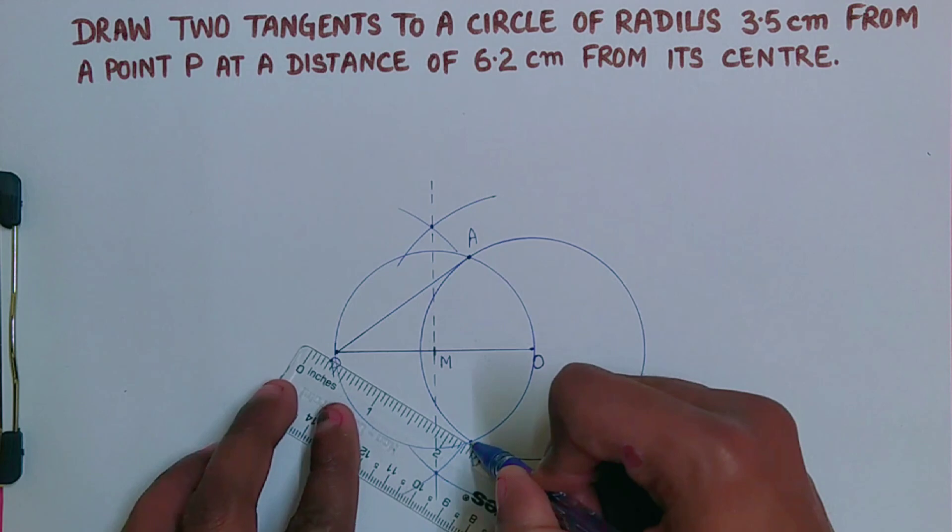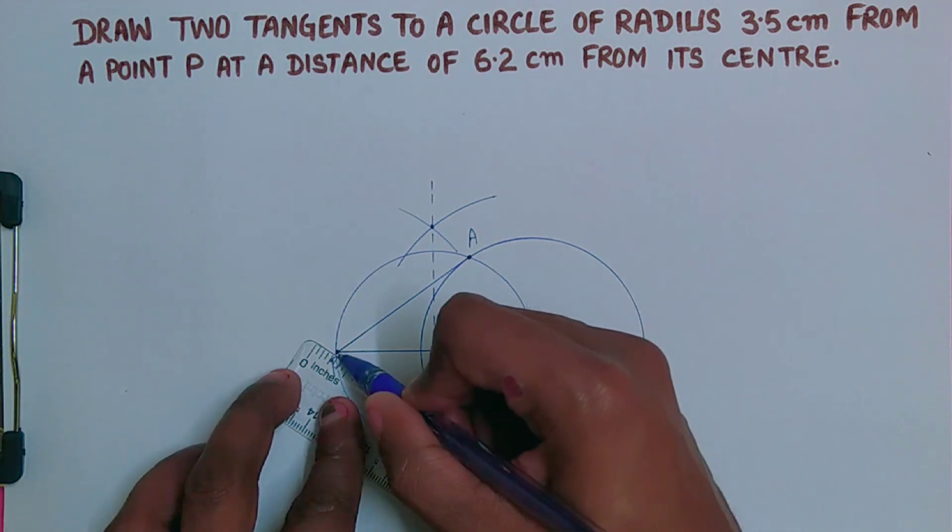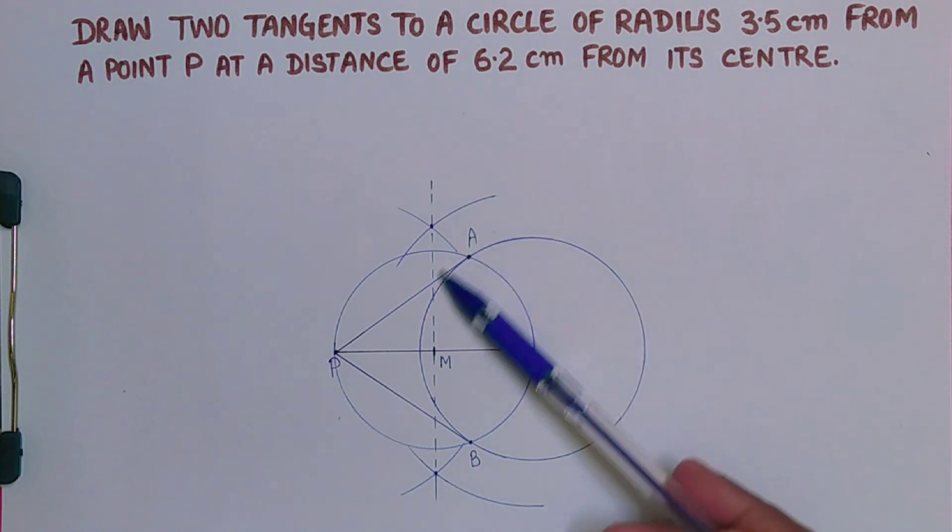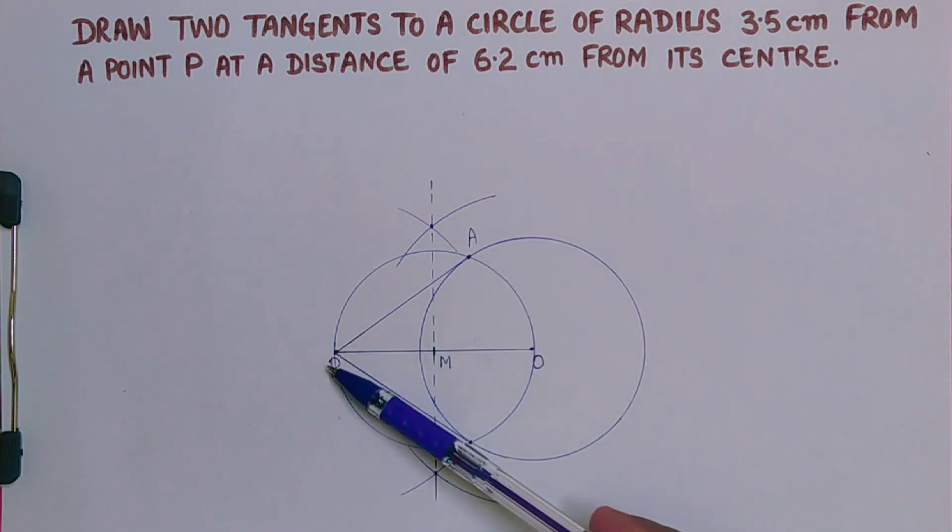This way you will get two tangents to a circle of radius 3.5 centimeter from a point P at a distance of 6.2 centimeter.